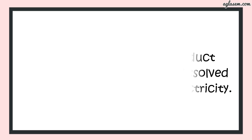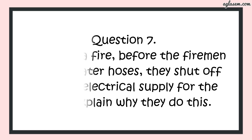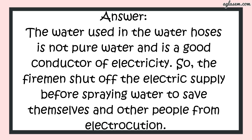Question number 7 says: in case of fire, before the fireman uses the water hoses, they shut off the main electrical supply for the area. Explain why they do this. The answer is: the water used in the water hoses is not pure water and is a good conductor of electricity. So the fireman shuts off the electric supply before spraying water to save themselves and other people from electrocution.